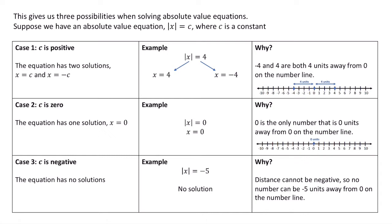You may wonder why that's true. |x| = 4 is saying: find a number x that's 4 units away from 0. Both 4 and negative 4 are 4 units away from 0 on the number line. If c equals 0, we'll have |x| = 0, and the only solution is x = 0.